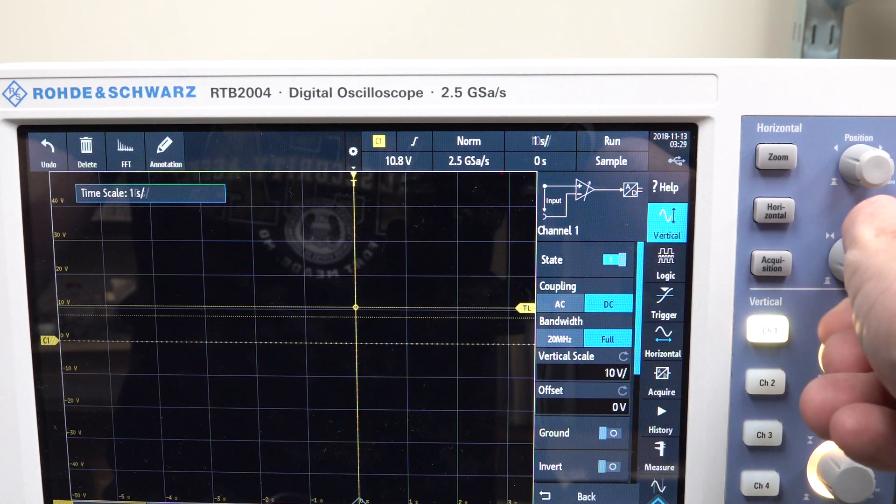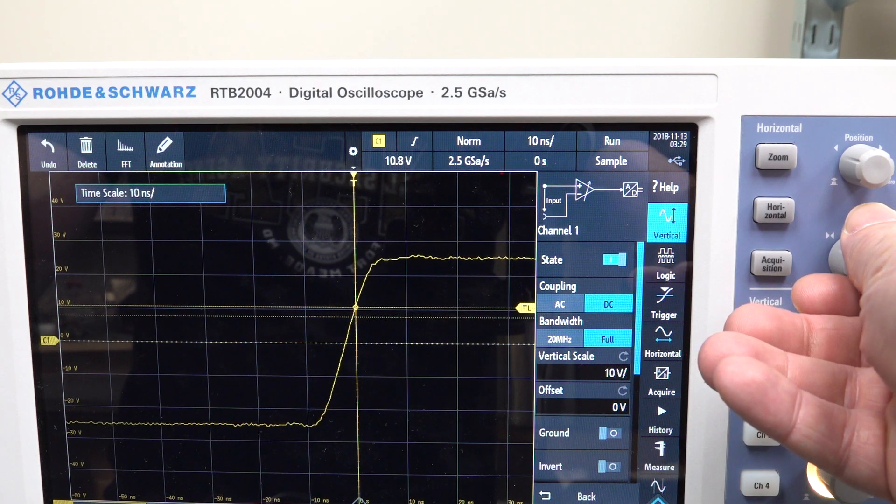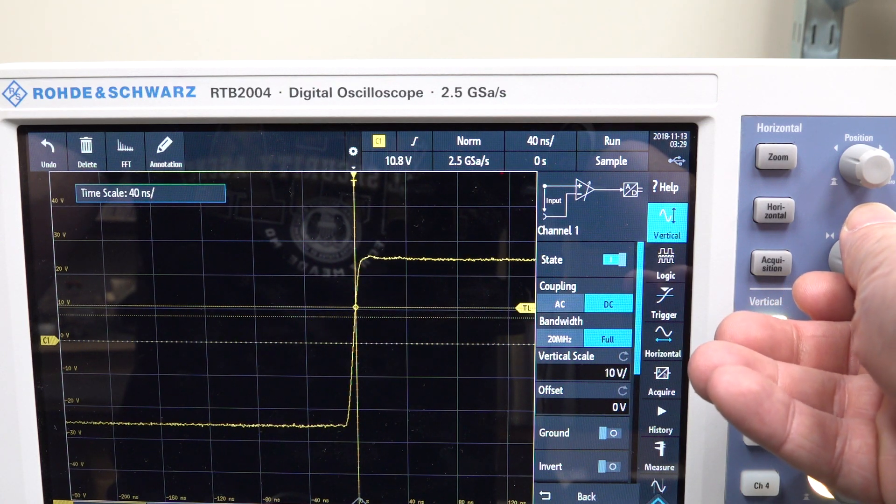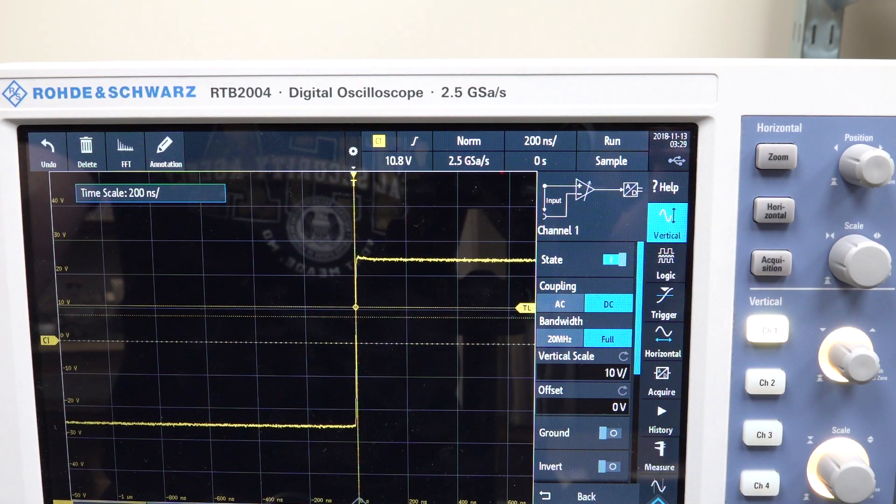But why is it just down at the 10, at the 20, 40, 80 nanoseconds? Why is there no 100 nanoseconds per division? Strange.